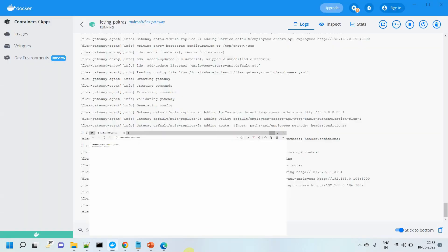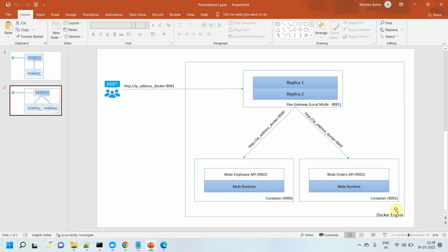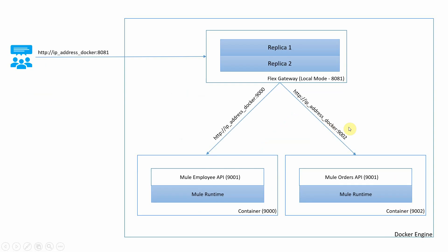So we have completed this setup. It's very simple — from a single Flex Gateway you can transfer requests to multiple upstream APIs. So that's it. I hope you liked the video. If you liked it, please click the like and subscribe button. Thanks for watching.